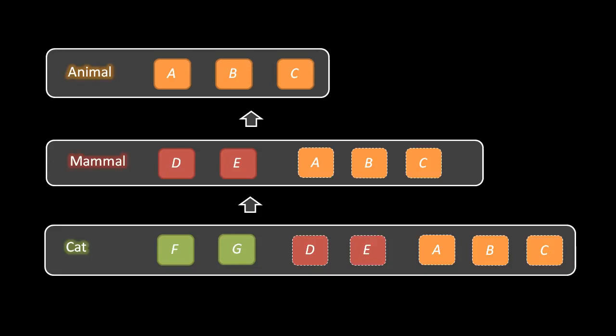An important thing to get straight here is the terminology for the relationships between classes. Mammal and Cat are subtypes of Animal, and Cat is a subtype of Mammal. Conversely, Animal is a supertype of Mammal and Cat, and Mammal is a supertype of Cat. Alternatively, instead of saying subtype we could say Descendant, and instead of supertype, Ancestor. Animal here is an Ancestor of Cat, and Cat is a Descendant of Animal. We also have the terms Parent and Child — a Parent is a direct immediate Ancestor, and a Child is a direct immediate Descendant. Animal is a Parent of Mammal, and Mammal is a Child of Animal, but Animal is not a Parent of Cat, nor Cat a Child of Animal, because the inheritance in that case is not direct, only indirect through Mammal.